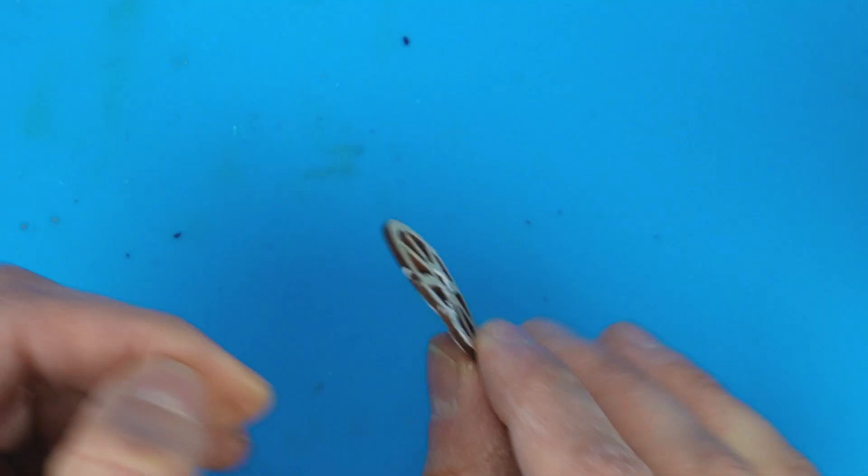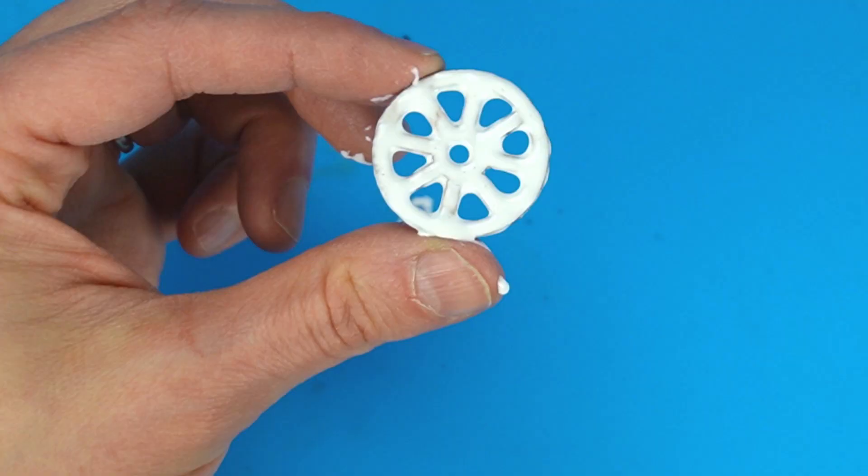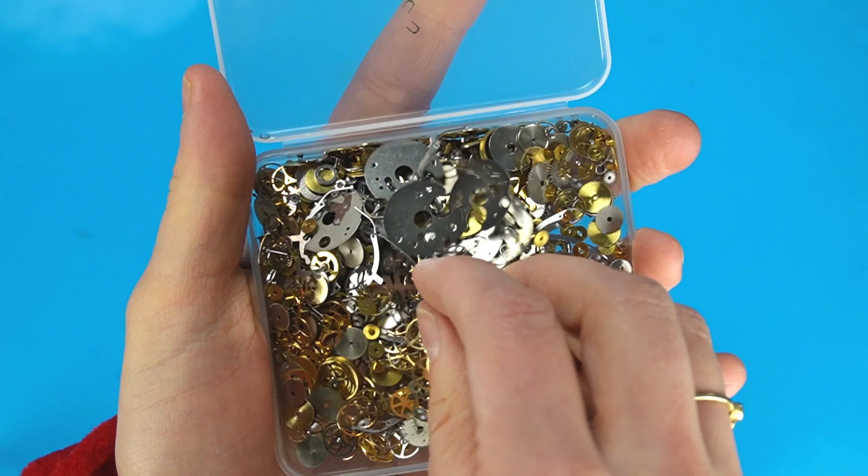I used this wooden wagon wheel to make the seat. I bent the wheel so it'll have a slight curve, and then I used some wood glue to cover the top and the bottom so it'll be smooth and strong. I let the wagon wheel dry overnight.